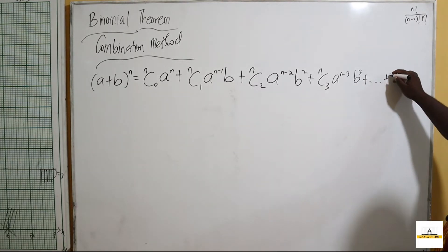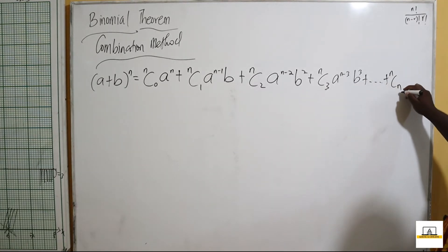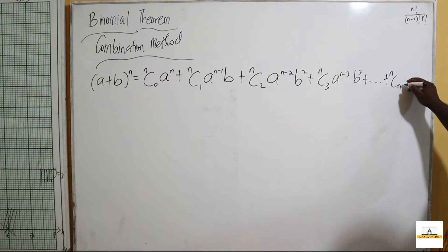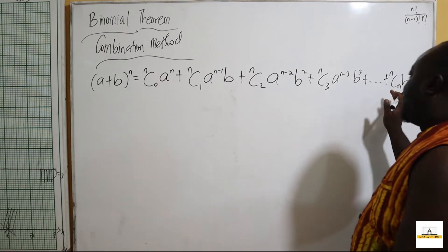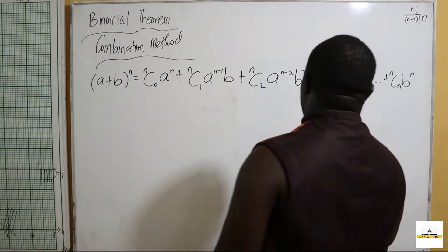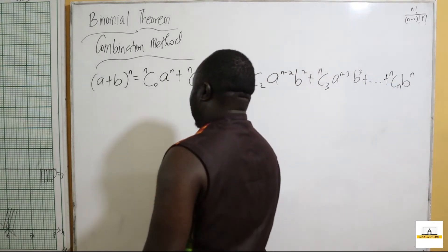The series continues until we get to the last term, which is n combination n times b raised to the power of n. And n combination n is also equal to 1.